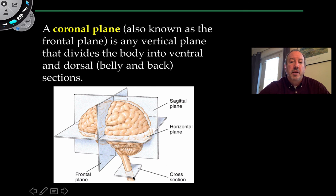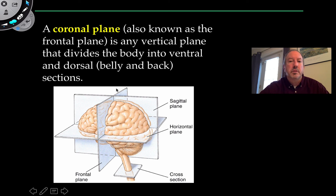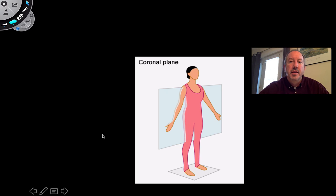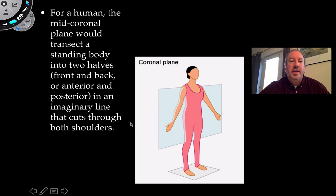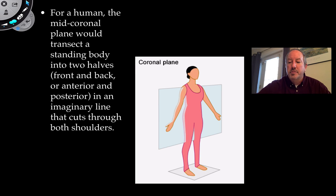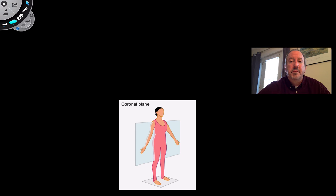The coronal plane — also called the frontal plane — is like an imaginary line cutting through both shoulders, dividing the body into front and back. Looking at the brain, it creates the front part and back part. It can create something ventral or dorsal, meaning toward the front or back, equivalent to anterior and posterior.